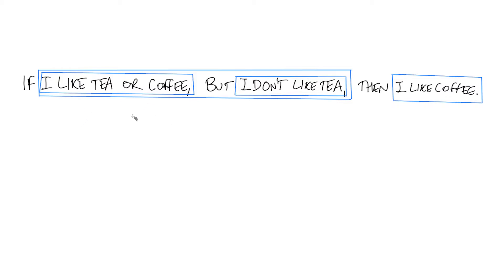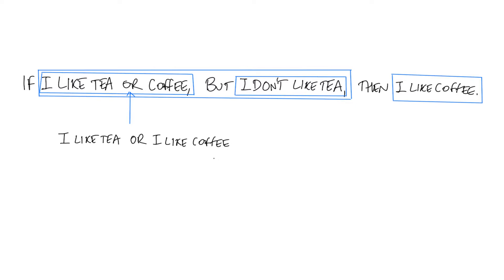There's one further step I can take to break this down, which is on the word 'or.' This word 'or' is like a connection between two parts of a sentence: one of them is 'I like tea.' Unfortunately, the other part is just the word 'coffee,' and the word 'coffee' itself is not a proposition — it's not something that's either true or false. But if I rephrase this as 'I like tea or I like coffee,' this means exactly the same thing, and now when I break it into pieces, those pieces are themselves propositions — each part is either true or false in its own right.